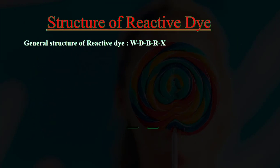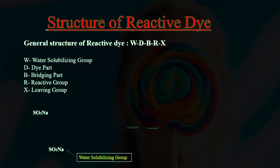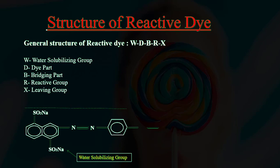General structure of reactive dye: W – D – B – I – X, where W is the water solubilizing group, D is the dye part, B is the bridging part, I is the reactive group, and X is the leaving group. This is the general structure of a reactive dye.